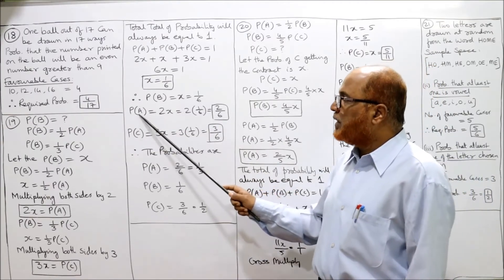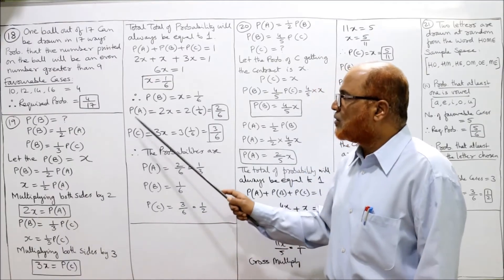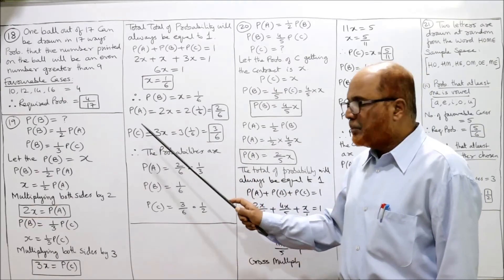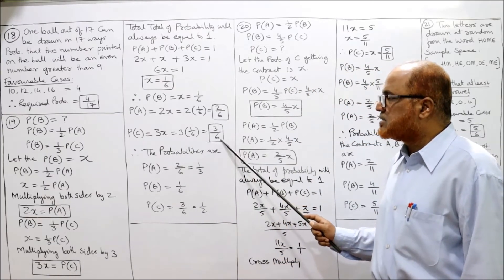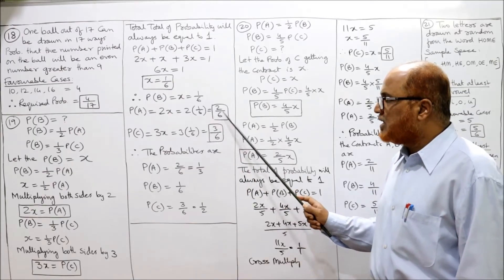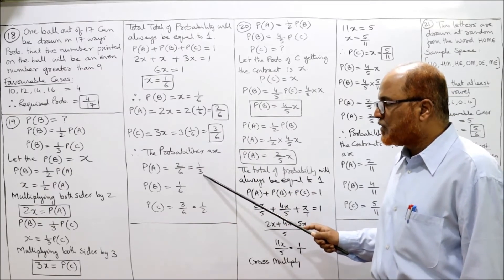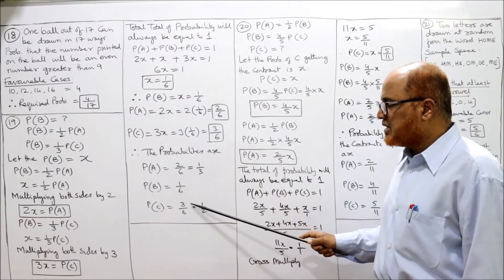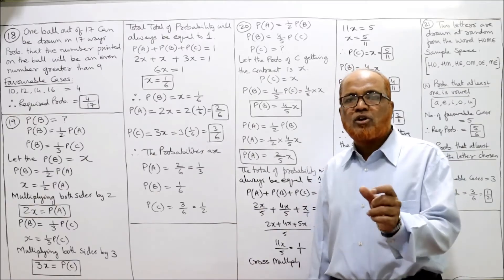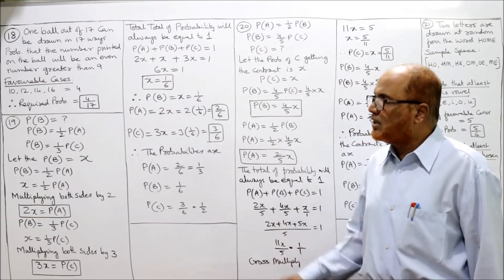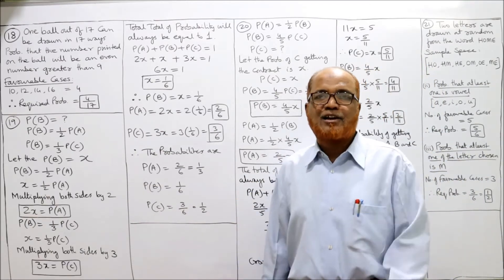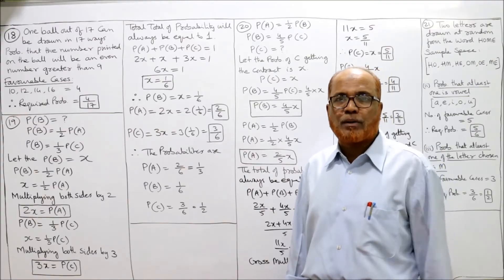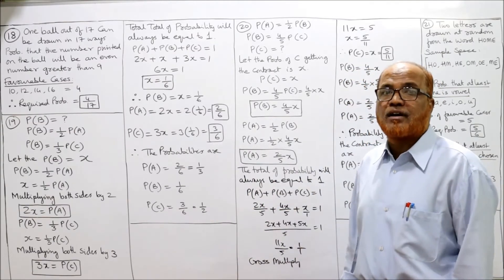Now P(A) equals 2X, so 2 into 1 by 6 equals 2 by 6. P(C) equals 3X, so 3 into 1 by 6 equals 3 by 6. So ultimately the probabilities are: P(A) equals 2 by 6 or 1 by 3, P(B) equals 1 by 6, and P(C) equals 3 by 6 or 1 by 2. This problem is entirely different — a completely different approach. After doing the problem you can understand the logic. Without understanding the steps it will be very difficult.